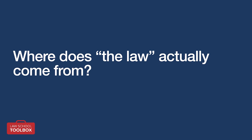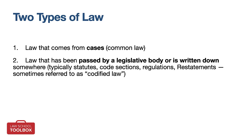There are two basic kinds of law that you'll study in law school. Number one: law that comes from cases, which is known as the common law. And number two: law that has been passed by a legislative body or is written down somewhere, like statutes, code sections, regulations, and restatements — sometimes referred to as codified law.